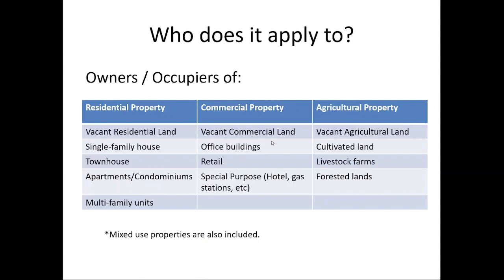In the case of commercial land, it would be vacant commercial land, office and retail buildings, as well as special purpose properties. For agricultural land, it would include vacant agricultural land, cultivated land, livestock farms, and forested lands. It would also include mixed properties, such as where an owner or occupier is occupying part of the building and using another part of it for commercial or other purposes.